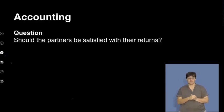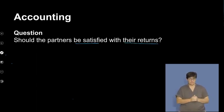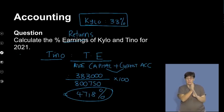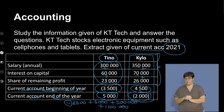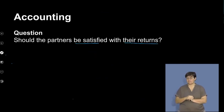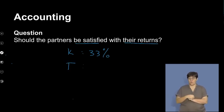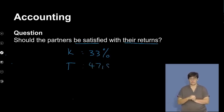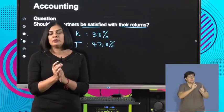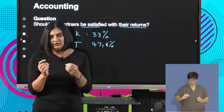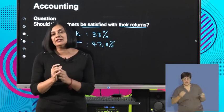Our next question: should the partners be satisfied with their returns? Let's quickly rewrite the answers from the previous page — Kylo: 33%, Tino: 47.8%. Now, will they be satisfied? How do we go about answering this question? Remember, as an investor and as a partner, I've invested in a business. I obviously expect a certain return — what am I getting out of my investment?